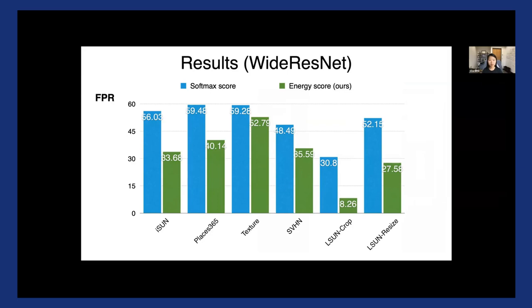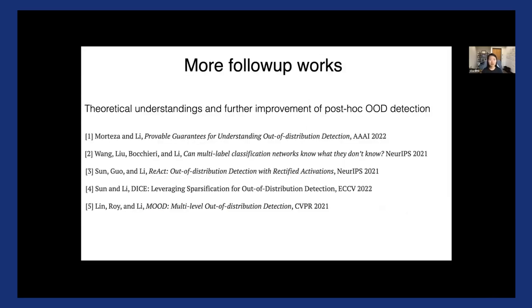And we tested thoroughly on more OOD datasets and consistently observe a significant improvement here. So again, this is model trained on CIFAR-10. And the x-axis highlights different OOD datasets. And the blue is when we use softmax score, and green is when we use energy score.